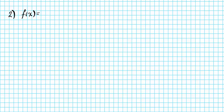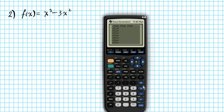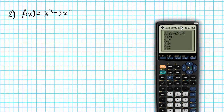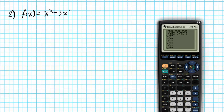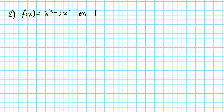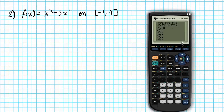For question number two, we have the function f(x) = x³ - 3x². We want to find the relative extrema for this function on the interval from negative one to four. Enter the function in the calculator, then hit Graph to see the curve constrained to that interval.